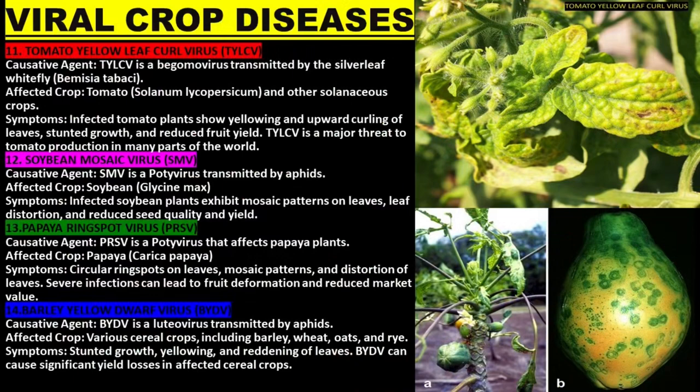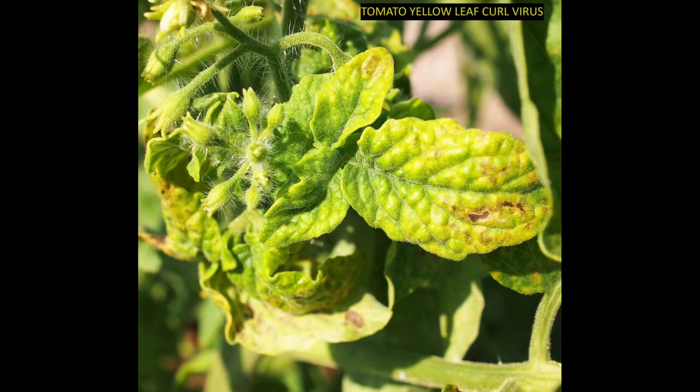Tomato Yellow Leaf Curl Virus is a begomovirus transmitted by the silverleaf whitefly. The affected crop is tomato and other solanaceous crops. Infected tomato plants show yellowing and upward curling of leaves, stunted growth, and reduced fruit yield.